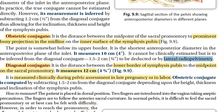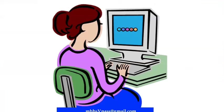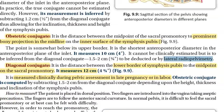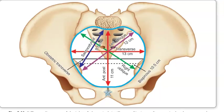So you now understand the conjugates. In this inlet, there is also a sacrocotyloid diameter and some other diameters. Radiopelvimetry involves radiological imaging to calculate the measurements. You can look at those additional diameters as well.